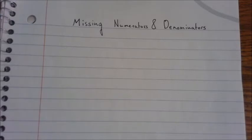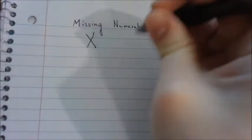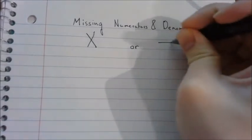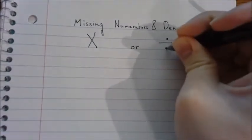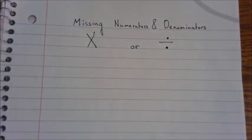When you're finding missing numerators and denominators you're going to have two options: you can multiply or you can divide. That depends on if you're going from a fraction with larger numbers or smaller numbers. Not larger values or smaller values, just the numbers.